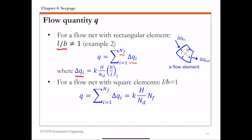For each flow channel, delta q_i is derived from Darcy's law: k times i times A. So delta q_i equals k times h over nd — this gives you the potential drop delta h, where delta h equals h over nd. Permeability k is the same for each channel, and i is the head drop over the distance water travels.